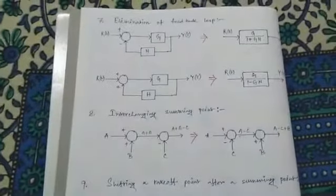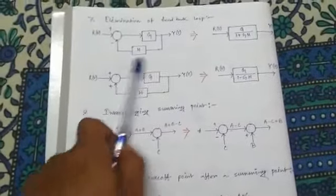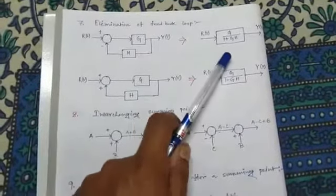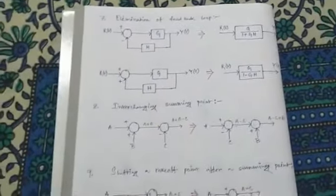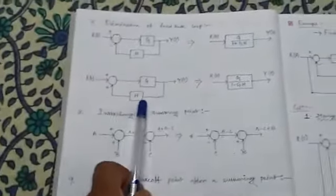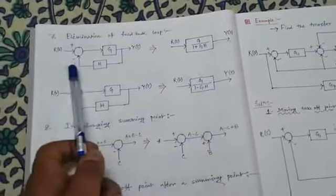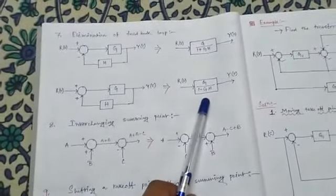Rule number seven: elimination of a feedback loop. This is a simple closed-loop negative feedback system. If we want to eliminate the feedback loop, the transfer function becomes g divided by (1 + gh). For a positive feedback loop, the transfer function is g divided by (1 − gh). If the feedback is negative the denominator is positive, and if positive the denominator is negative.